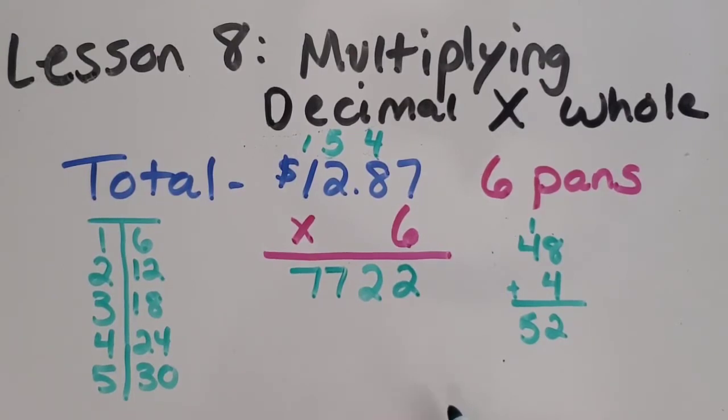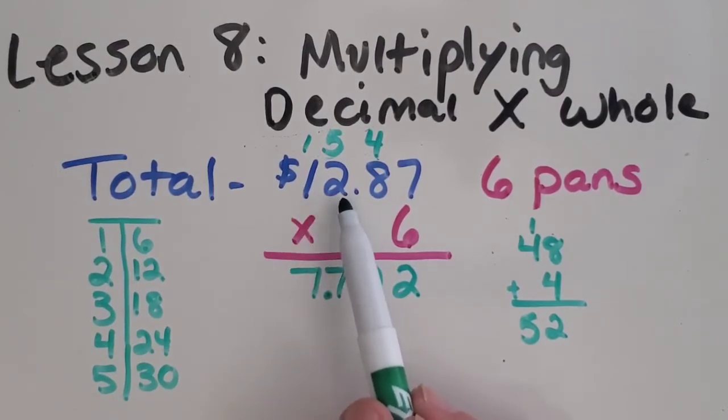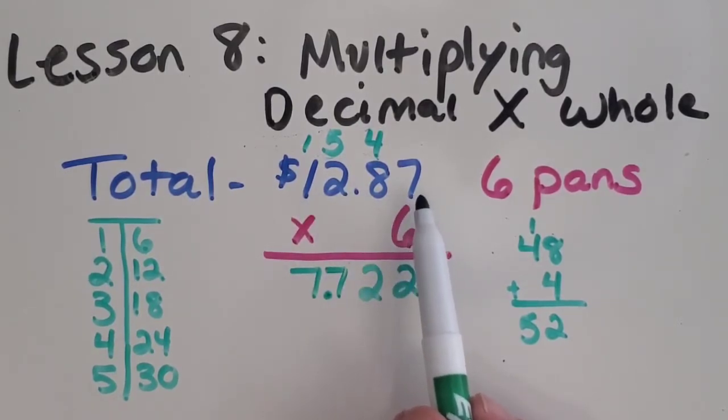So you can kind of think about what is the most reasonable answer. Where do you guys think the decimal point would go? What would be the most reasonable amount of money? Let's test out your prediction here. So if I put my decimal point right here, does $7 sound reasonable? Hopefully you said no, because you know $12.87 is one pan of nachos.